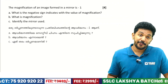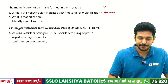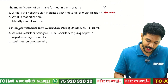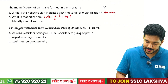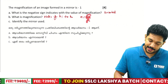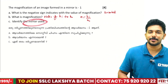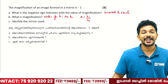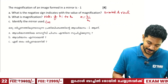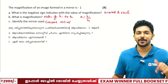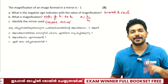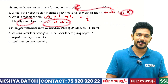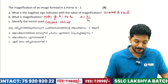The magnification of an image formed in a mirror is minus one. The negative sign means the image is inverted. Magnification is the ratio of height of image to height of object (hi/ho). An inverted image is a real image. Since the image is real and inverted — this must be a concave mirror, because convex mirrors and plane mirrors only produce virtual images.